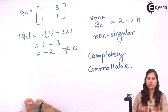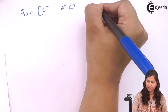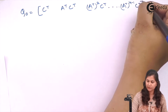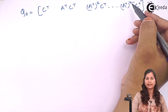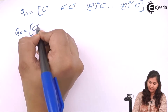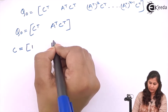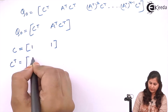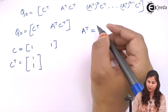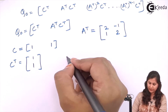Now to test observability, we use the observability matrix Q0 = [C^T, A^T·C^T, (A^T)²·C^T, ..., (A^T)^(n-1)·C^T]. Again n = 2, so we calculate C^T and A^T·C^T. C matrix is [1, 1], so C^T becomes a column vector [1; 1]. A^T is [2, -1; 1, 2], obtained by transposing A.